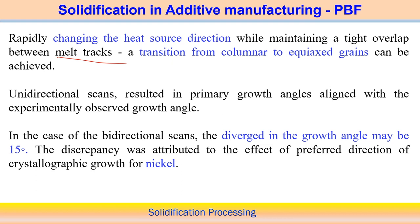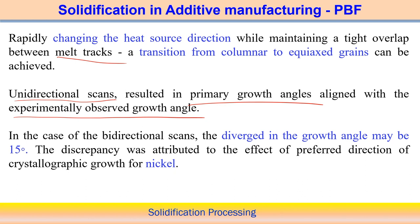It is observed from different studies, and numerical simulations have also been performed, to understand what can be the primary growth direction in additive manufacturing, or in which direction the temperature gradient — and therefore the heat flow — is maximum. In unidirectional laser scanning in powder bed fusion, the primary growth angle is usually aligned with the maximum heat flow direction.